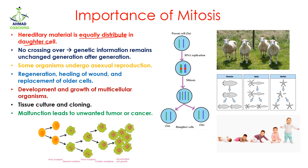That is why mitosis is important — because it equally distributes the number of chromosomes into the daughter cells. In mitosis, no crossing over takes place. This means the genetic information present in the parents is transferred to the daughter cells without any change, so the daughter cells will have the same characteristics.